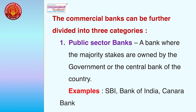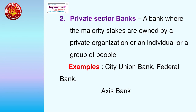Commercial banks can be divided into three categories. First, public sector banks — where majority stakes are owned by the government or central bank — examples: State Bank of India, Bank of India, Canara Bank. Second, private sector banks — where majority stakes are owned by a private organization, individual, or group — examples: City Union Bank, Federal Bank, ICICI, HDFC, Axis Bank.